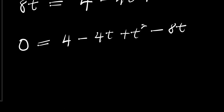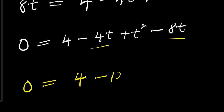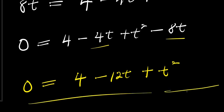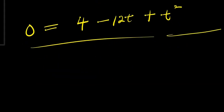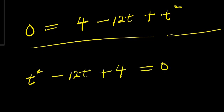Moving 8t over to the right side, it becomes negative 8t. We have 0 equals 4 minus 4t minus 8t, which simplifies to minus 12t, plus t squared. Rearranging this quadratic equation, we have t squared minus 12t plus 4 equals 0.